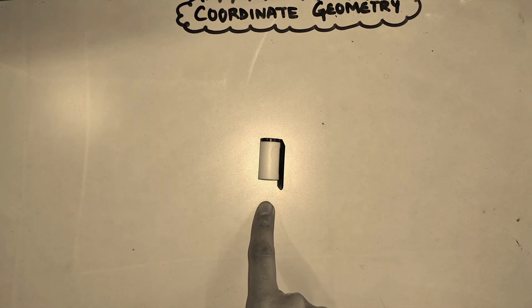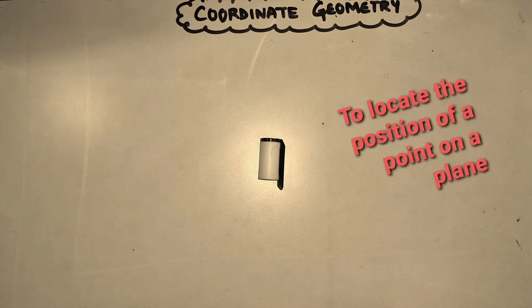But what is the exact position of this cap? In such situations, we use coordinate geometry where we need to locate the position of a given object or point on a plane.